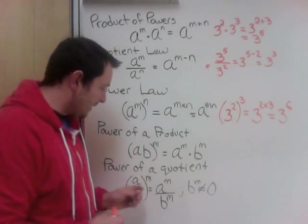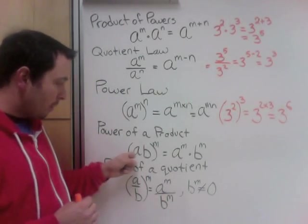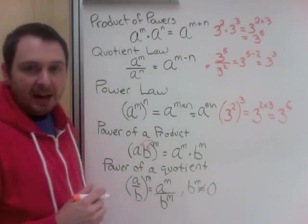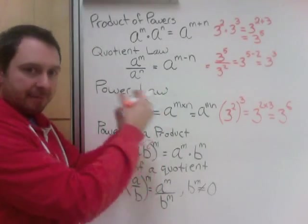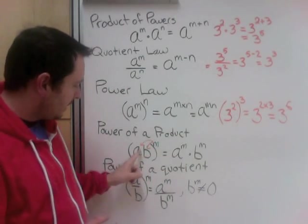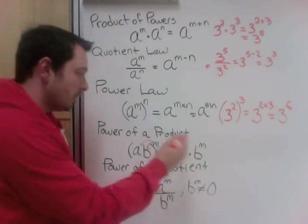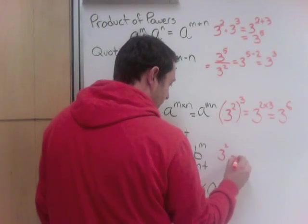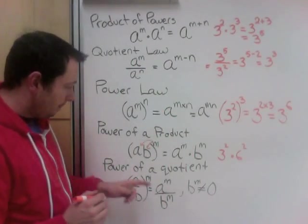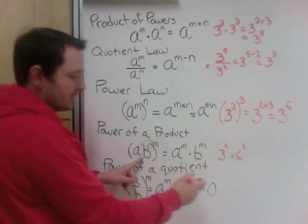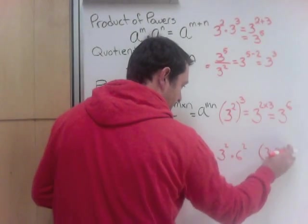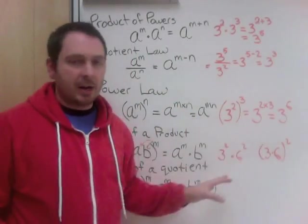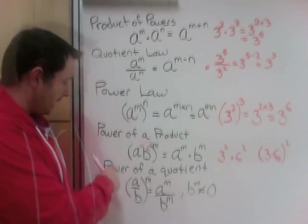Next, power of a product. Now we have two different bases, so we're not combining them. But when two things are multiplied and there's a power outside the bracket, that power technically needs to affect both pieces. The power comes into every part of the bracket. So it's A to the power of M times B to the power of M. This works in both directions. For example, 3 squared times 6 squared — because they both have the same power, we can write it as (3 times 6) squared. Typically you'll be doing this with letters like x.